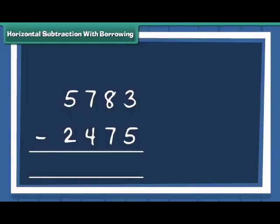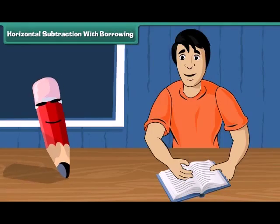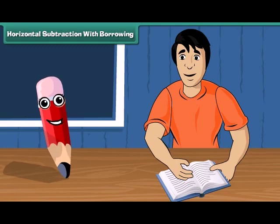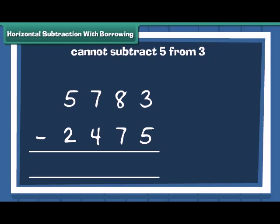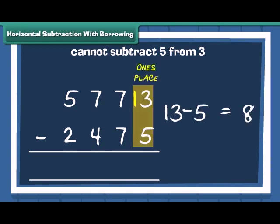Mac, how will we solve this question? It's simple. We start subtraction of numbers at one's place. Note that you cannot subtract 5 from 3. So, you will borrow 10 from 8 to make 13 and 13 minus 5 is equal to 8.